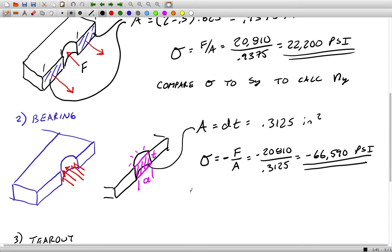Once again, if we wanted to calculate a factor of safety for that, it's a normal stress, so we're comparing directly to the yield strength.